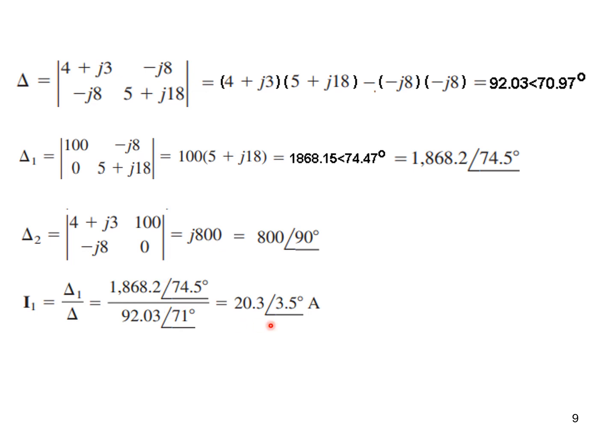And now I1 is delta 1 over delta. Putting in these two values, this is the answer. And similarly I2 is delta 2 over delta. Putting in the values, we get this answer. So I hope you have been able to follow. And those who are curious, I will strongly recommend that you do the case 1 and case 2 that I had shown in these slides. Thank you.